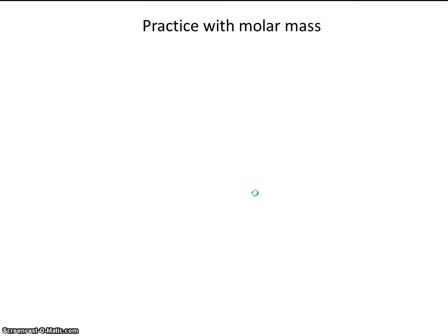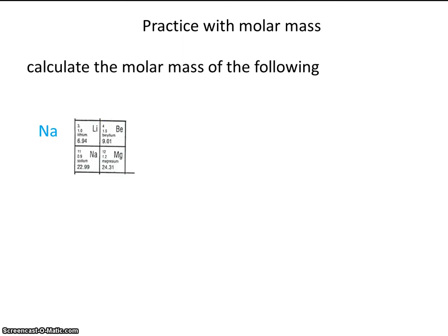So let's get some practice calculating molar mass. Let's calculate the molar mass for sodium. Well, you'll find sodium on your periodic table here. Notice the mass is 22.99 AMU. Now, do you remember how many sig figs we're taking from the periodic table? That's right. We're taking three. So the number you should record is 23.0. Do you remember what the units are? That's right. They're grams per mole.